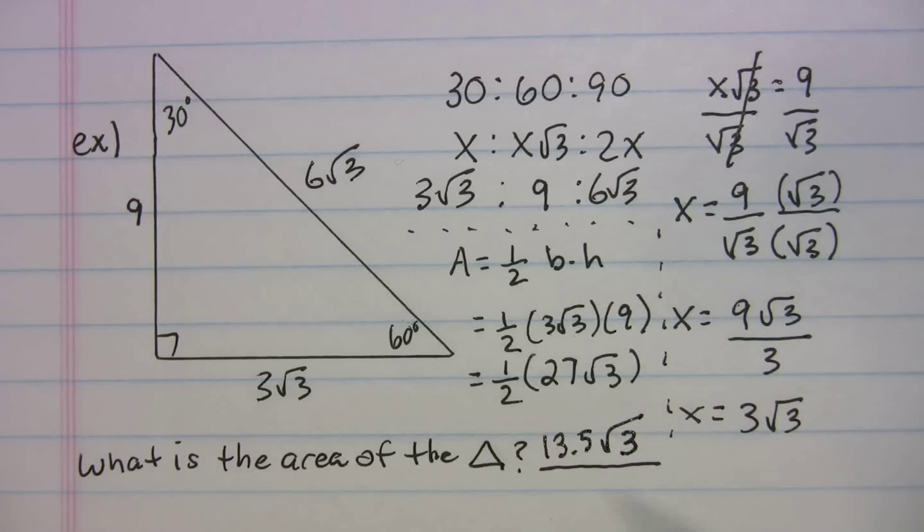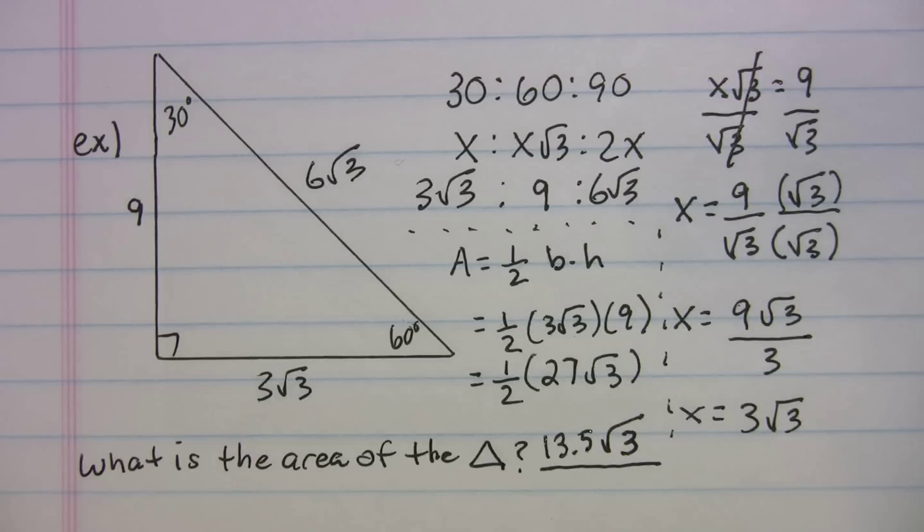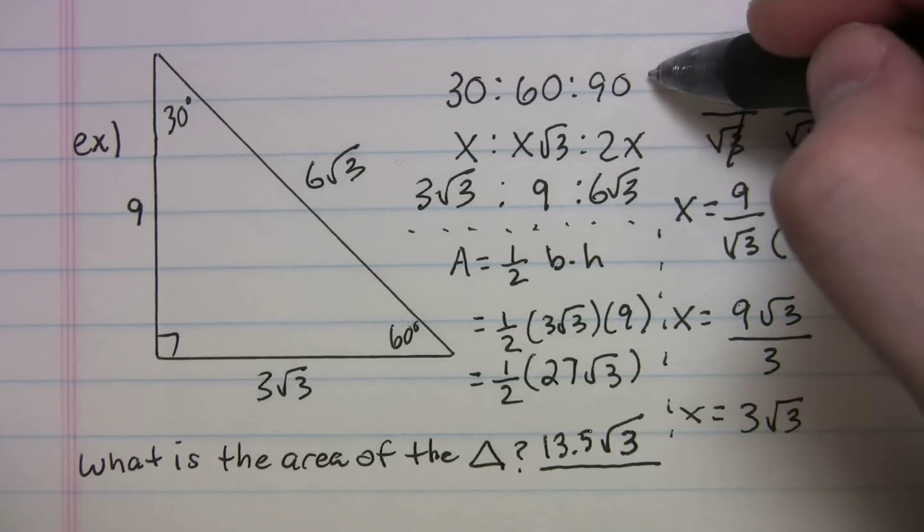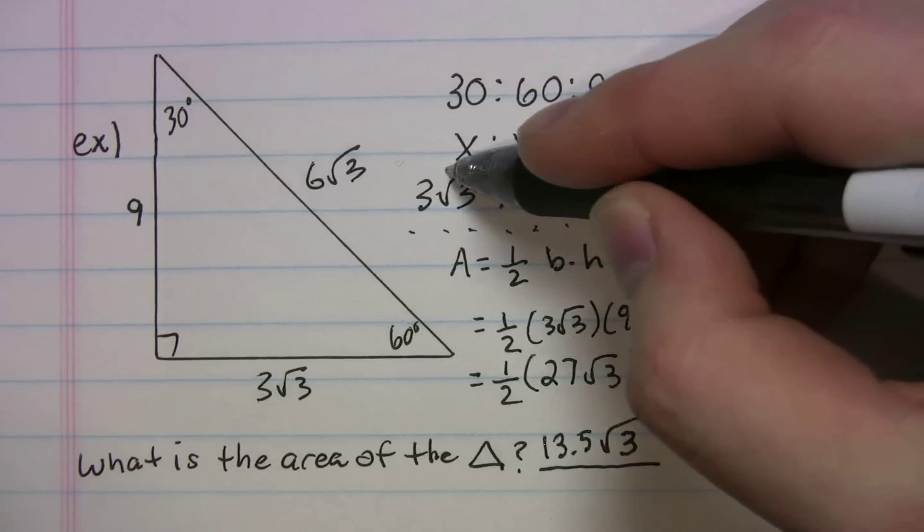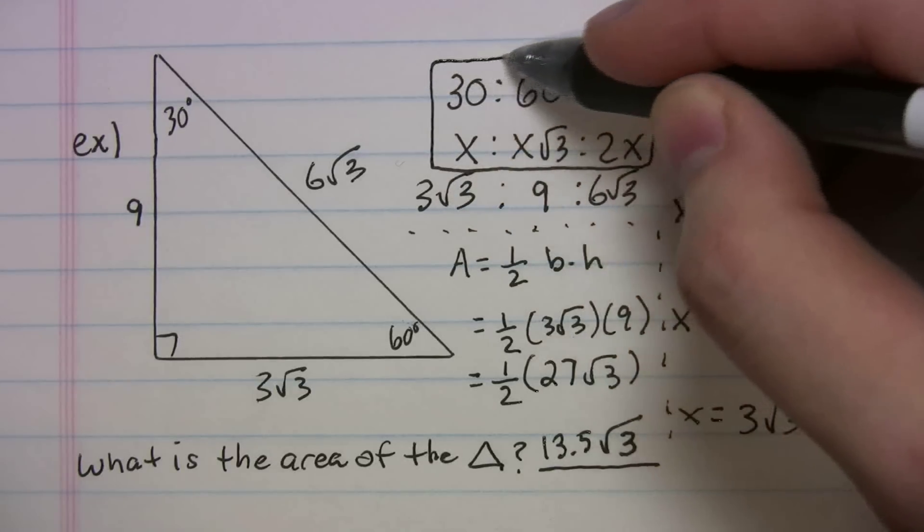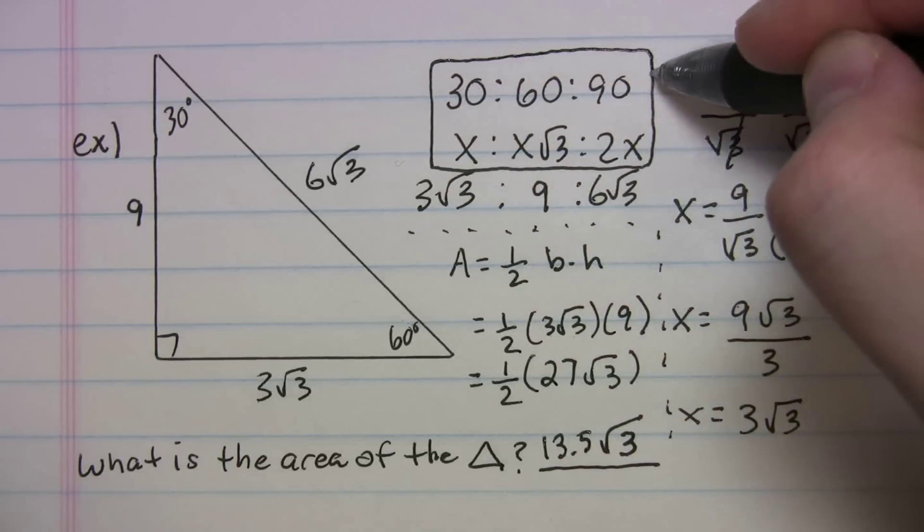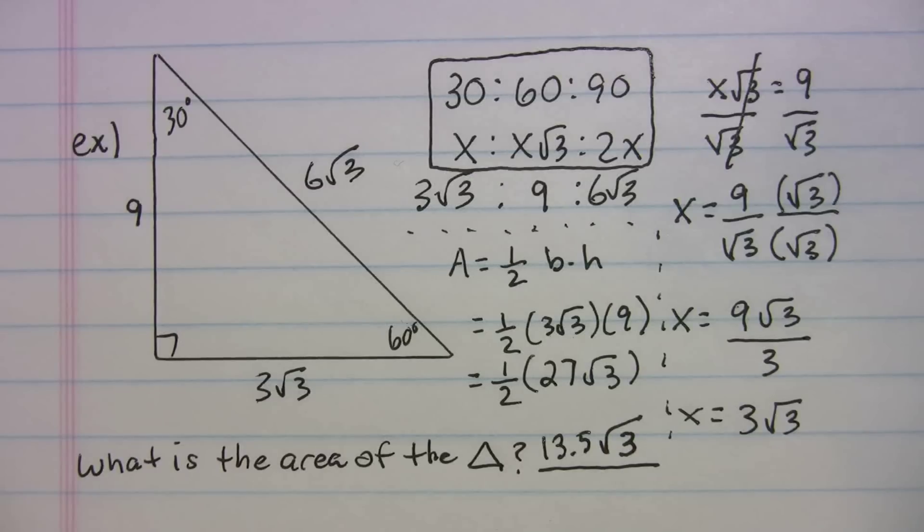So on test day, they might have left it as 27 halves times radical 3. But 13.5 radical 3 is the same thing. But again, to get this problem right, you have to have this memorized. You've got to have that ratio in your head. You don't want to be flipping back to the beginning of this section and wondering what the heck was that ratio? It may not make sense come test day if you're under time pressure and you're trying to figure everything out. So memorize that, and you'll be able to get these questions right. I hope that helped.